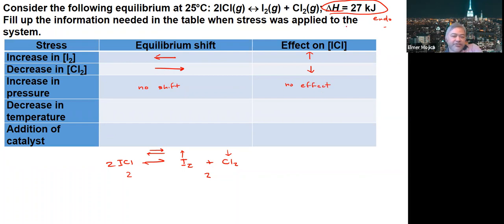Decrease in temperature. This is endothermic, so the heat is on the reactant side. If there's a decrease in temperature, the reaction favors the one that produces heat.